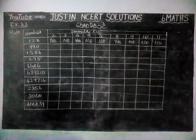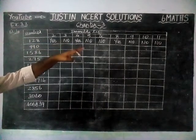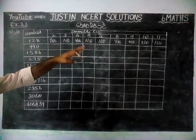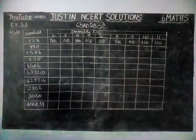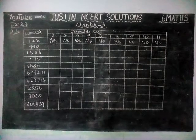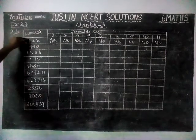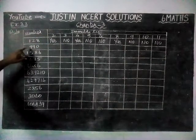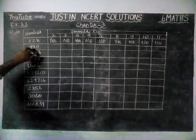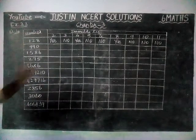In this, we are going to find whether the number is divisible by 2, 3, 4, 5, 6, 7, 8, 9, 10, 11. They have given the numbers, and by using the divisibility rules, we are going to find whether it is yes or no. First, 128 — they have given everything. Now we are going to find it from 990.